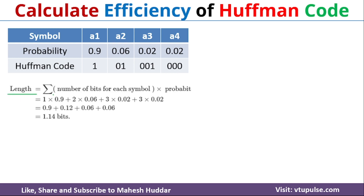That can be calculated using this formula. The average length is equivalent to the summation of the number of bits for each symbol multiplied by its probability. For A1, 1 bit is required and the probability is 0.9, so we have 1 × 0.9. For A2, 2 bits are required and the probability is 0.06, so 2 × 0.06. For A3, 3 bits are required and the probability is 0.02, so 3 × 0.02. Similarly for A4, 3 × 0.02. Once you solve this equation, you will get 1.14 bits as the total number of bits required.